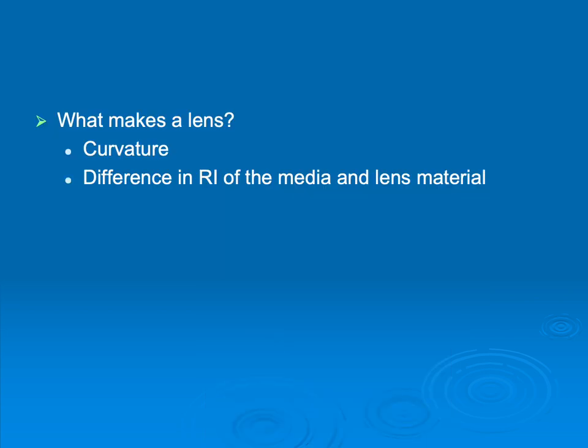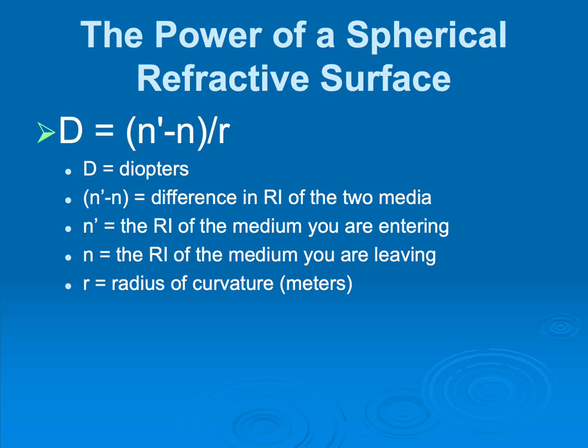So what makes a lens? Well, number one, a lens has to be transparent, and a lens has to have curvature, and there has to be a difference in the refractive index of the media and what surrounds it. So let's look at a formula for how strong of a refractive surface a lens can be. The diopters are equal to the difference in the refractive index of the two media divided by the radius of curvature in meters.